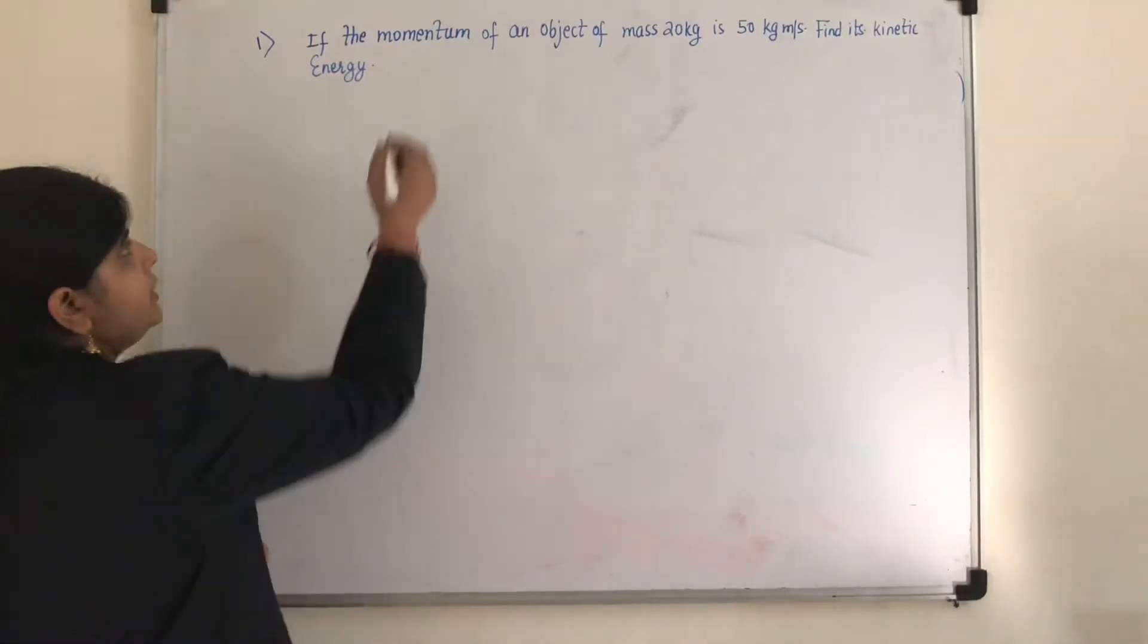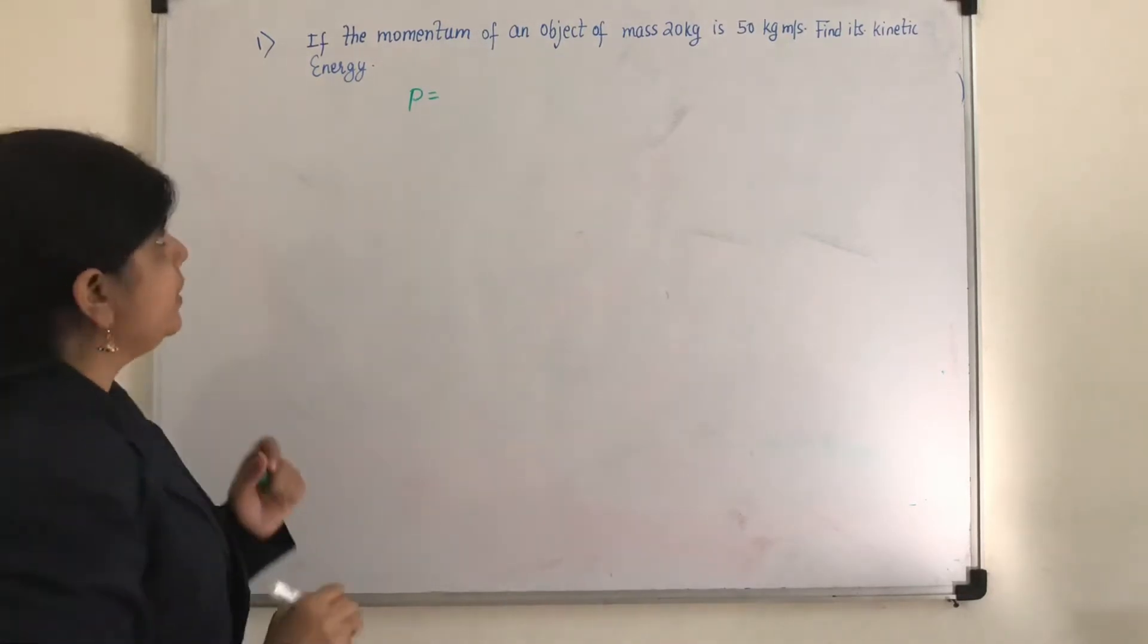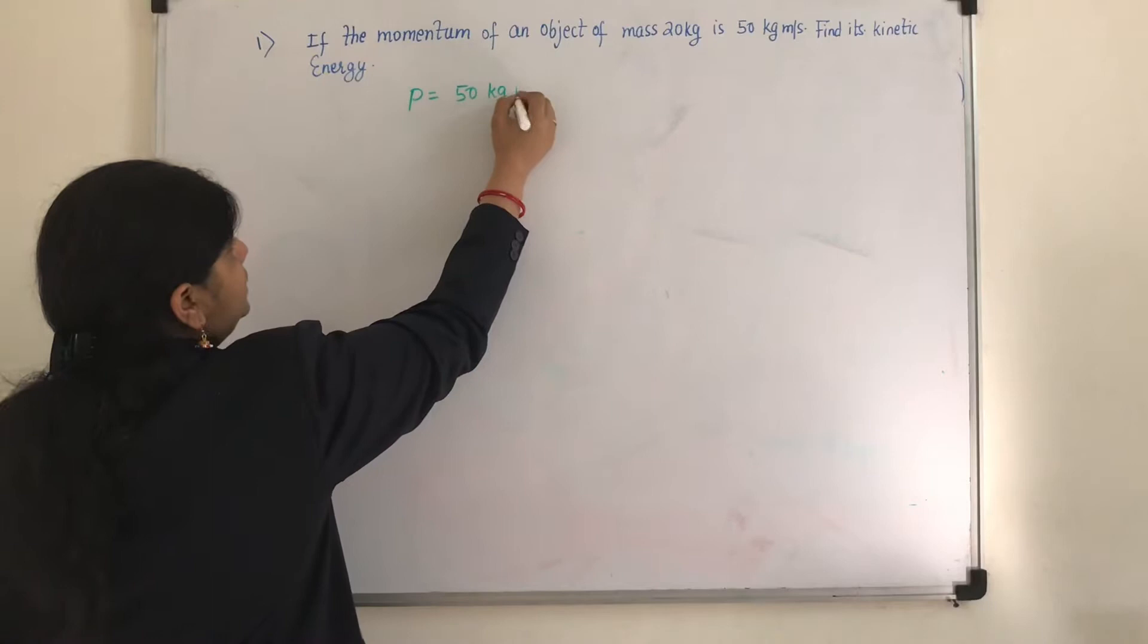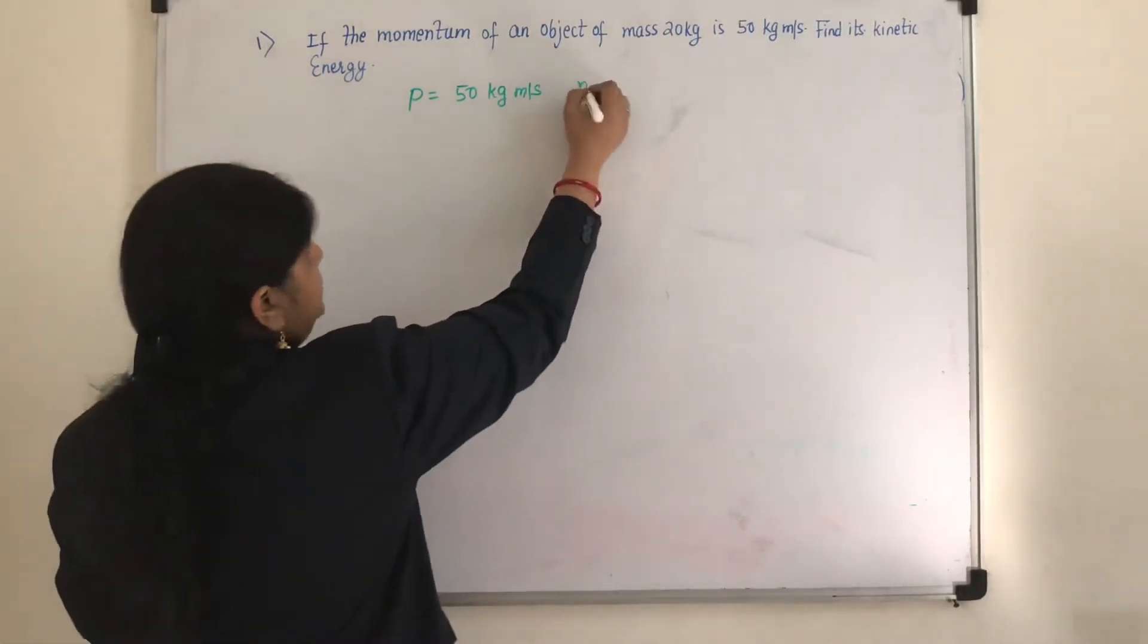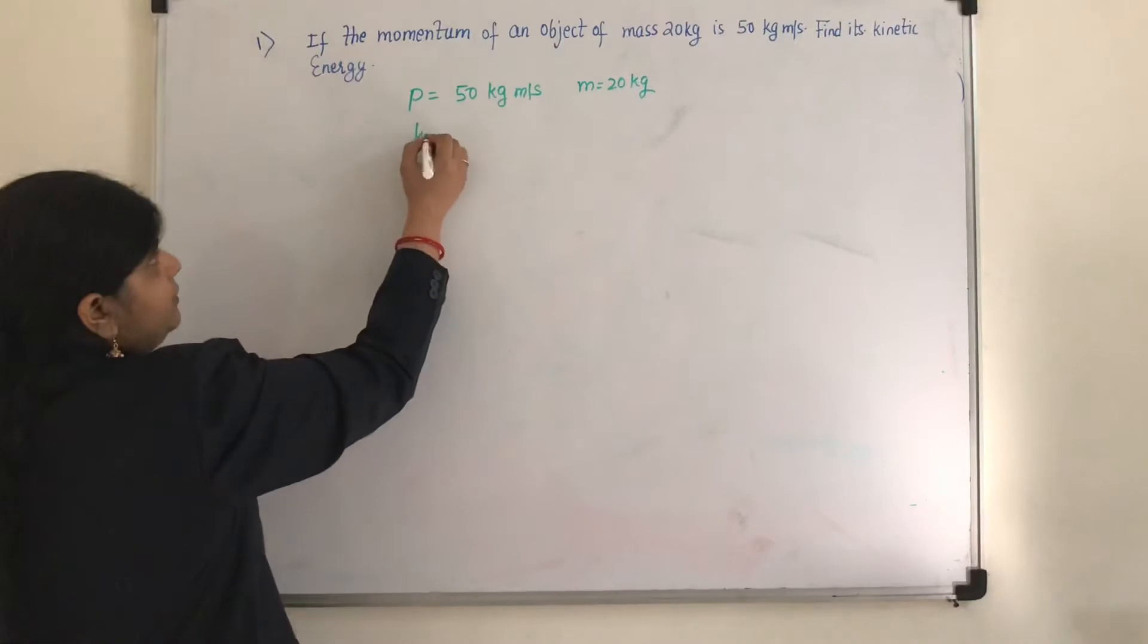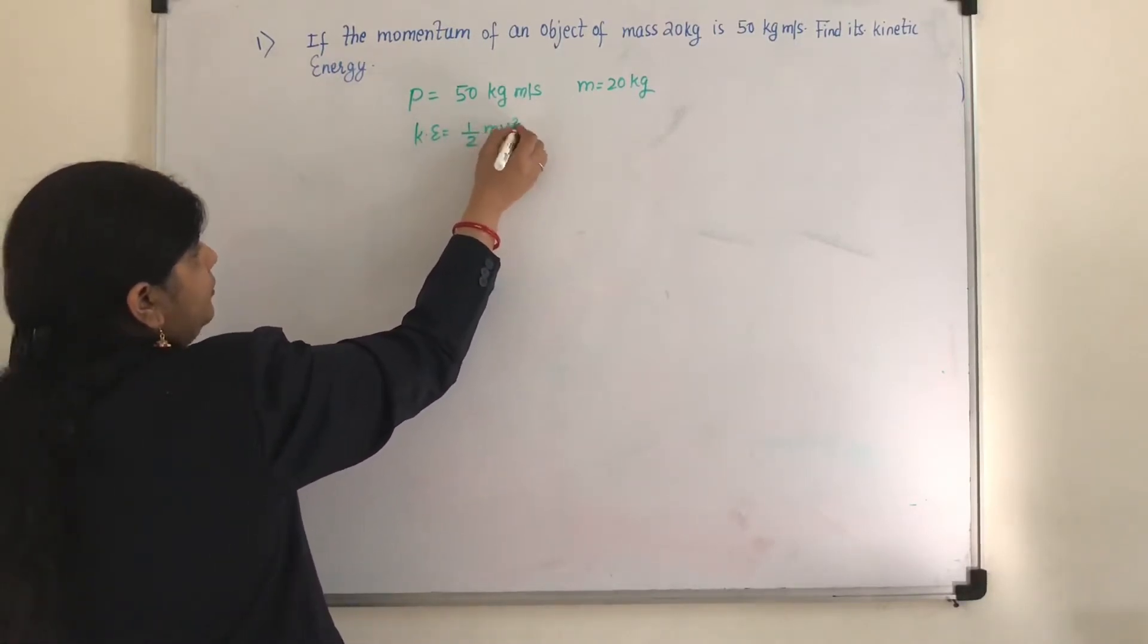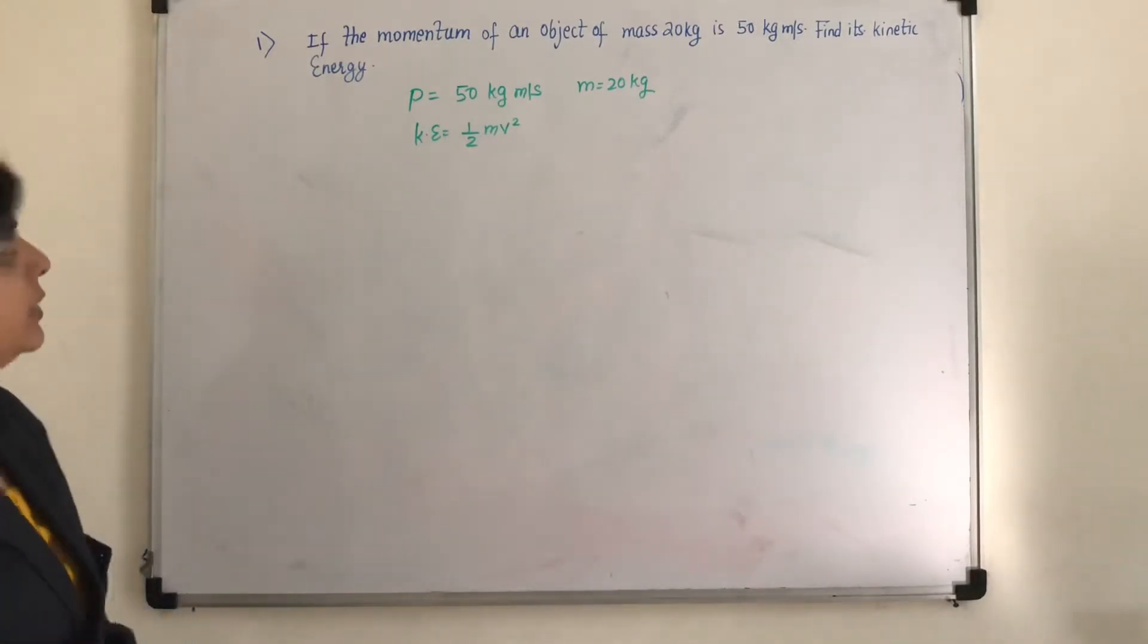So what is given here is momentum, momentum is denoted by P. So momentum is given as 50 kg meter per second and mass of the object is given as 20 kg. And we need to find the kinetic energy. Kinetic energy means we need to find the value of half mv square. This we have to find out.